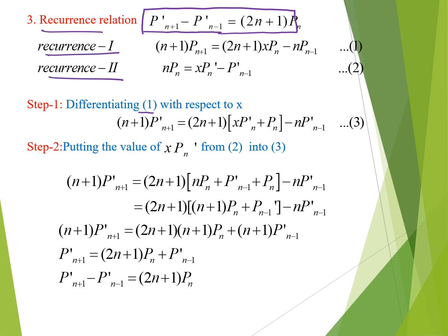Differentiating recurrence relation 1 with respect to x, we get: (n+1) P_{n+1}'(x) = (2n+1)[x P_n'(x) + P_n(x)] minus n P_{n-1}'(x). Now we replace the value of x P_n'(x) using recurrence relation 2, substituting x P_n'(x) = n P_n(x) + P_{n-1}'(x).